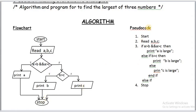Now the pseudo code. First step is start, then read three numbers. After reading the three numbers, there is a condition. If this condition is true — meaning A is greater than B and also C — then the immediate statement will be executed. If it is false, control goes to the else statement.